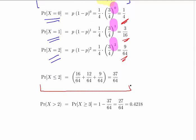The probability of X less than or equal to 2 is the summation of those three probabilities. 1 quarter is written as 16 over 64, 3 over 16 is 12 over 64, 9 over 64 is the probability of X equals 2. Working that out, we get the probability of X less than or equal to 2 is 37 over 64.